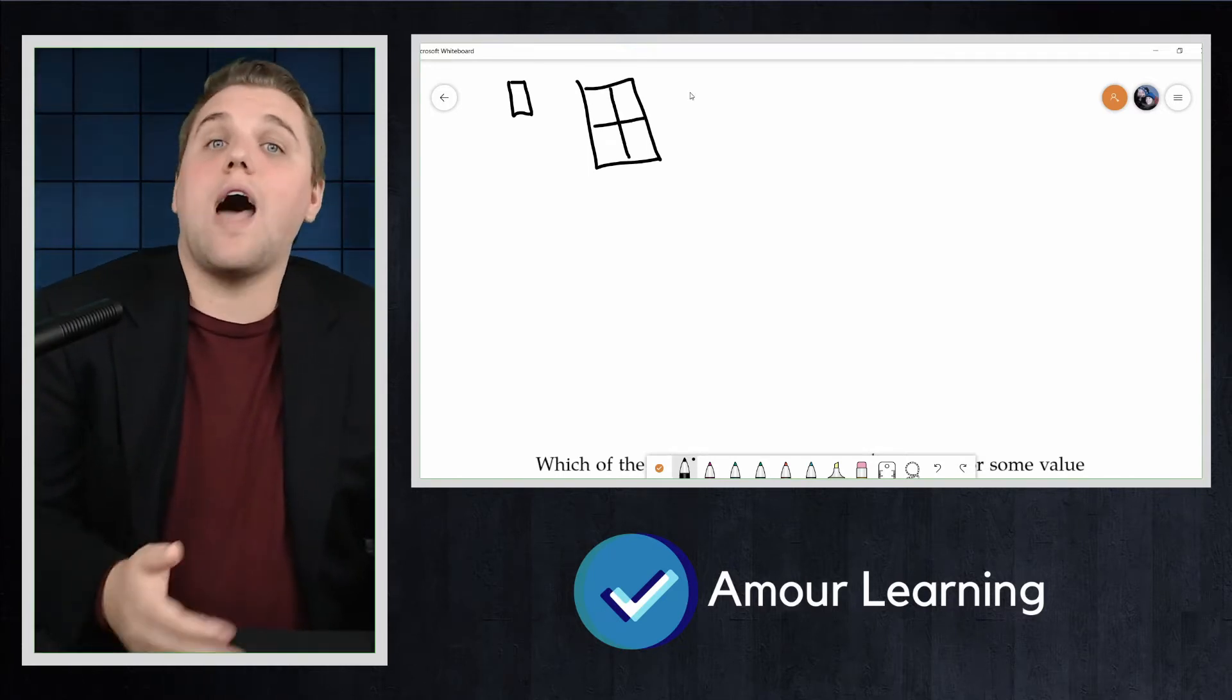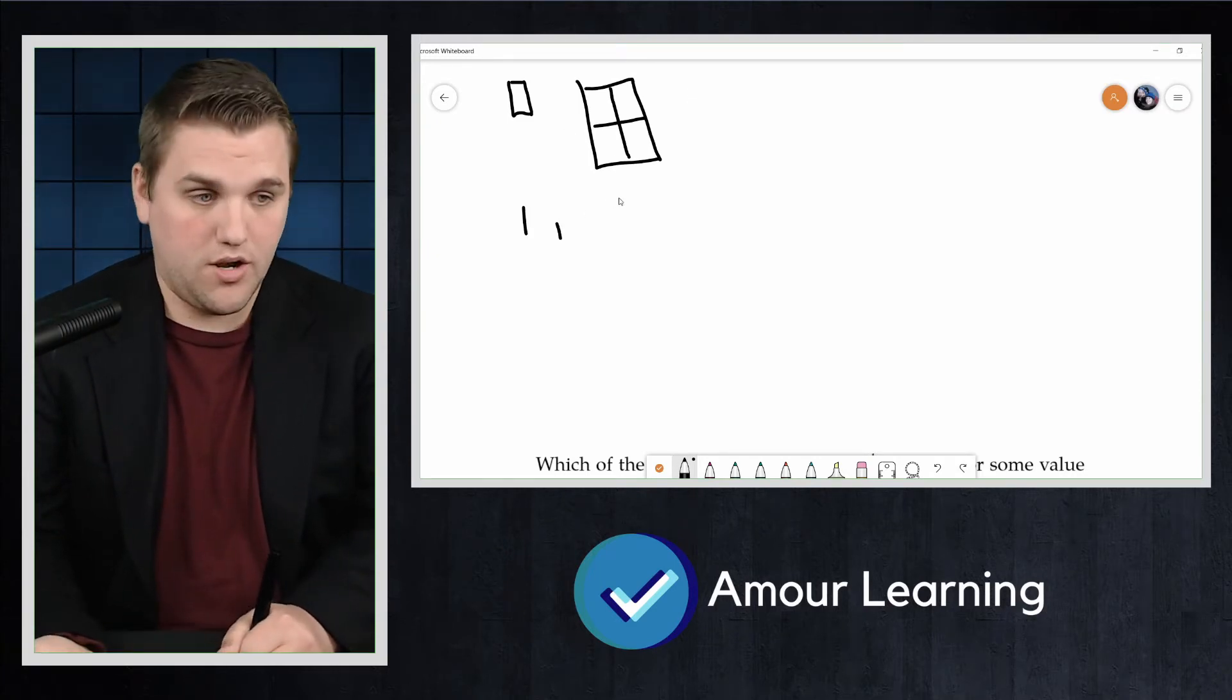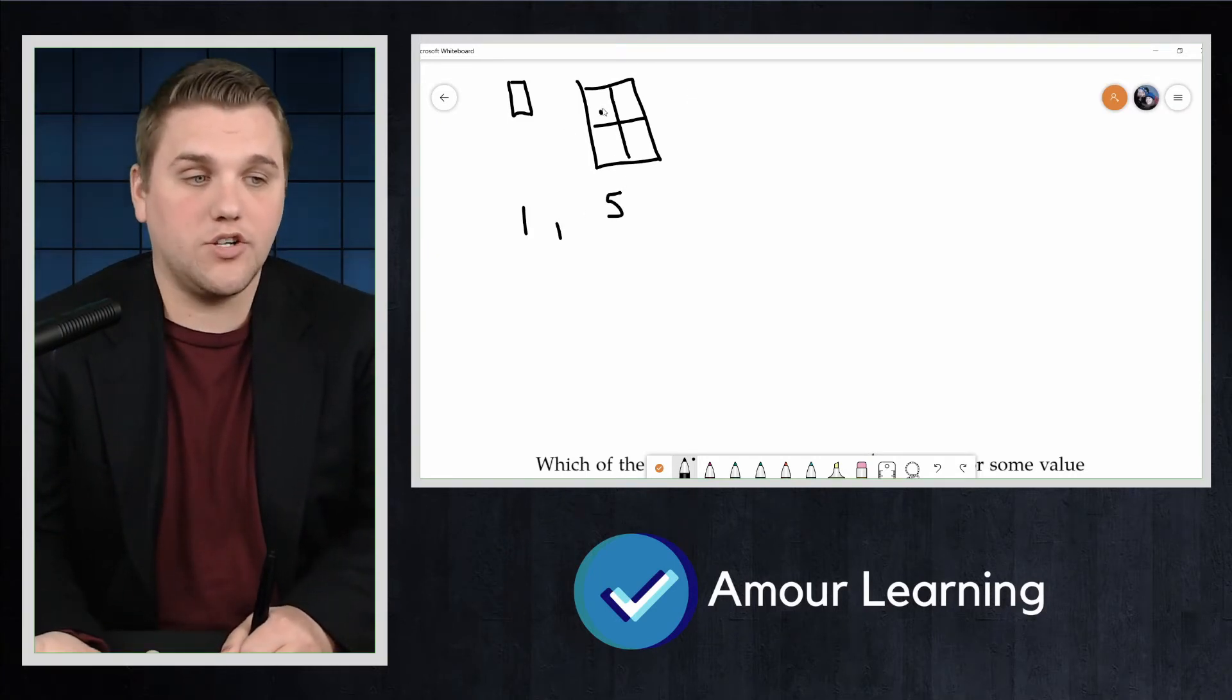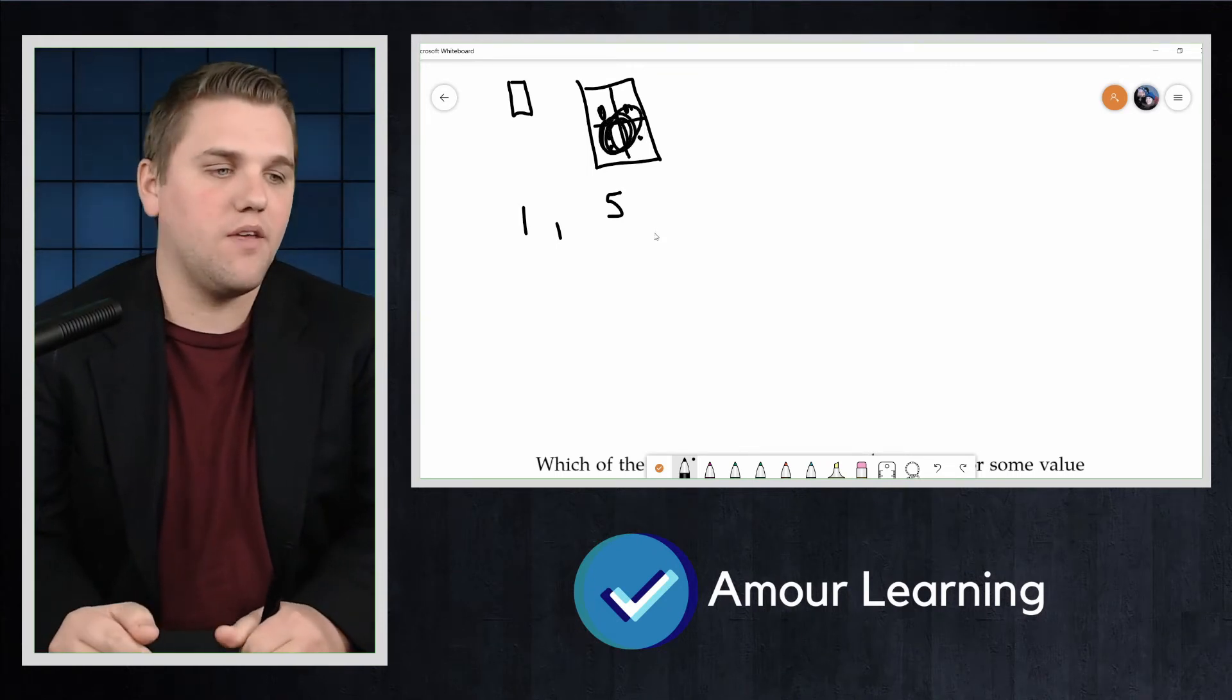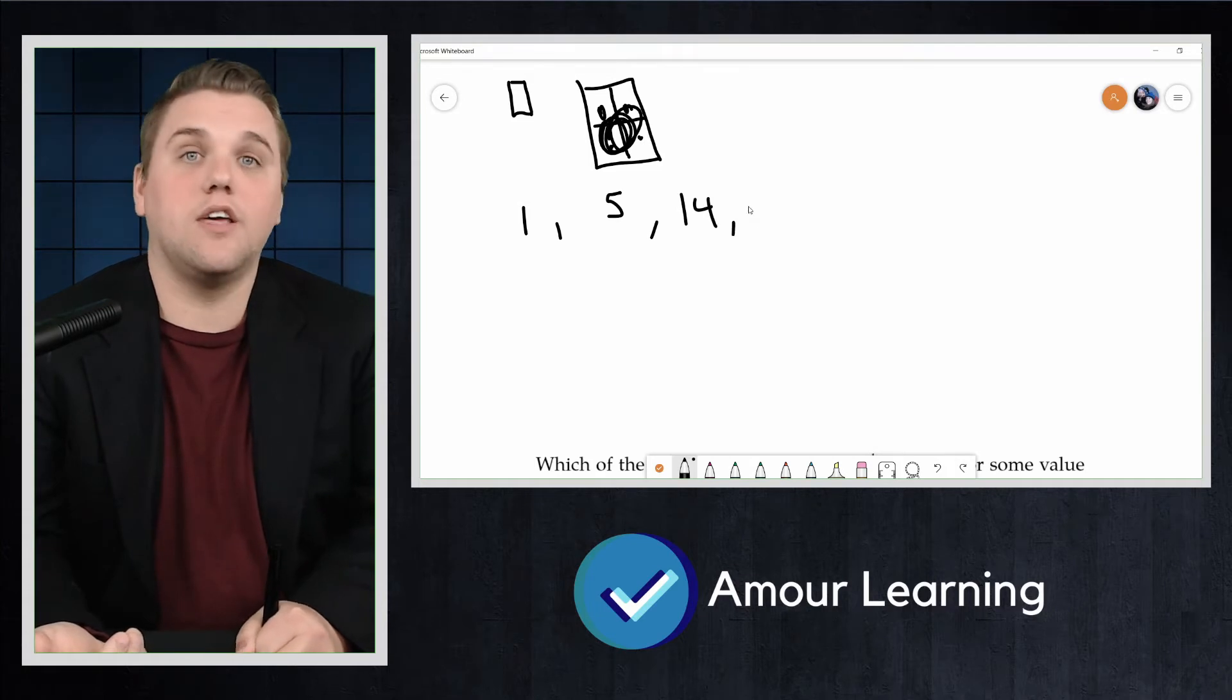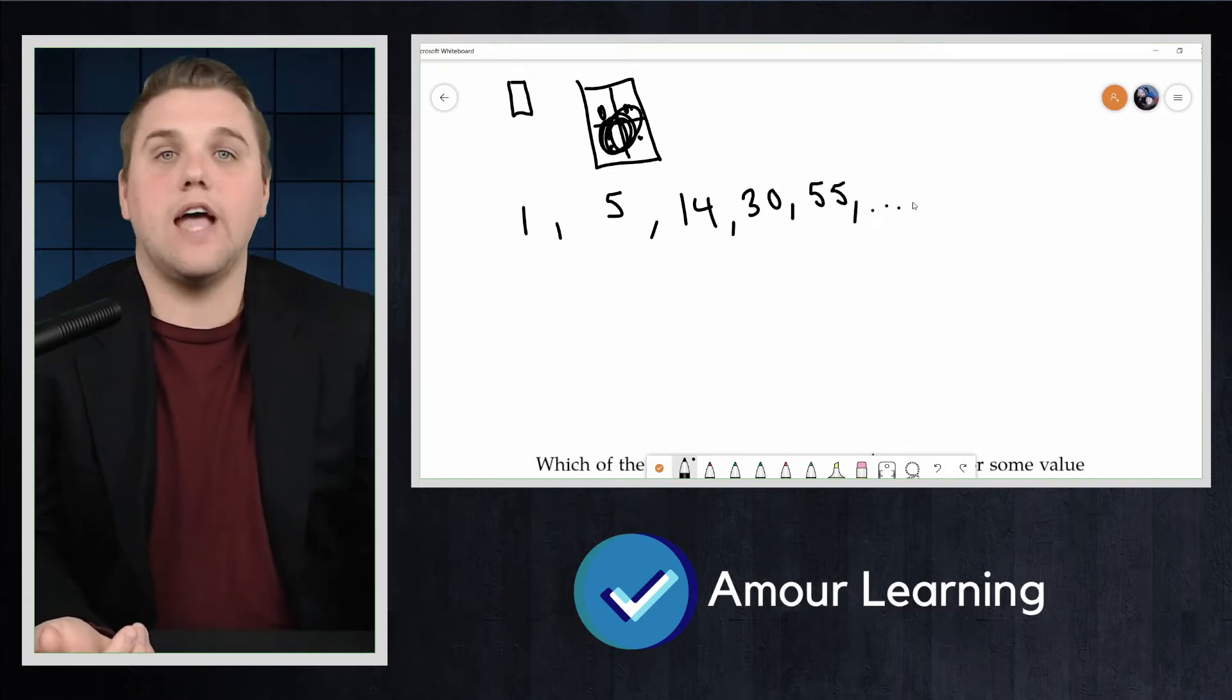After a little thought, we arrive at the sequence 1 for the first one, 5 for the second one. There's 1, 2, 3, 4, and 5, the whole thing. And then 14, 30, 55, and so forth.